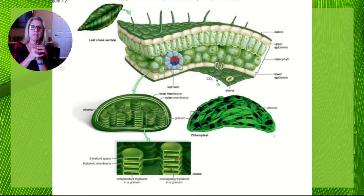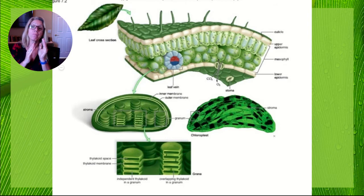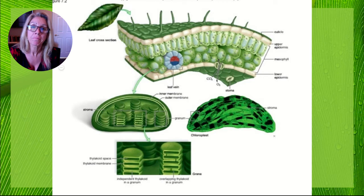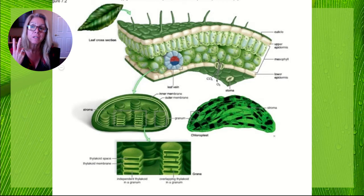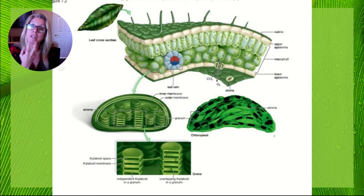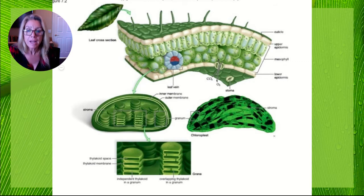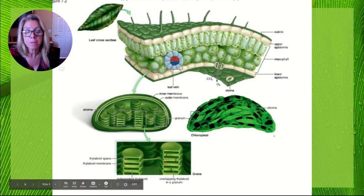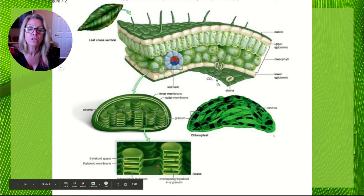Those hydrogen ions don't want to stay inside the thylakoid membrane — they want to go back out, and when they do you will make ATP. So now we have oxygen and ATP. There's also the energy transfer molecule NADP, and we'll be making some of that as well. Out in the spaces around these pancakes — in the stroma — is where the cooking happens; that's where you make the sugar.